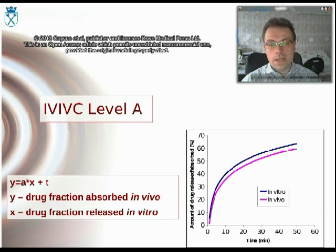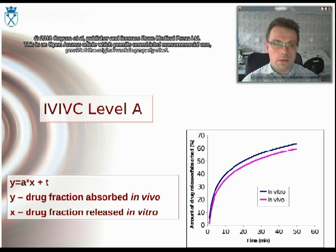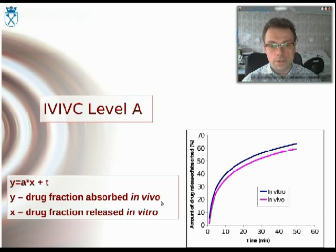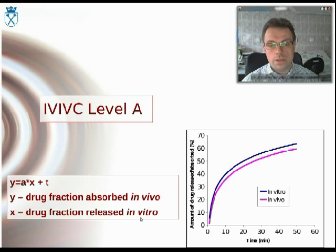This is the classical approach of IVIVC Level A based on the instructions of the FDA. Here we have a very simple linear formula where the drug fraction absorbed in vivo is the dependent variable and the independent variable is the drug fraction released in vitro. For the latter, you have the results ready for computations, measured in the lab.